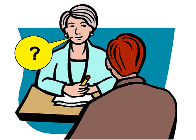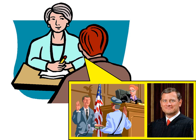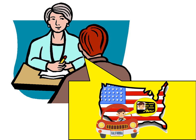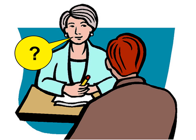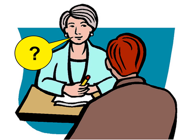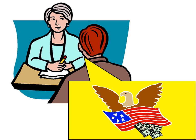Who is the Chief Justice of the United States now? John Roberts. Under our Constitution, some powers belong to the states. What is one power of the states? Give a driver's license. What is an amendment? An amendment is a change to the Constitution. Under our Constitution, some powers belong to the Federal Government. What is one power that belongs to the Federal Government? To print money.